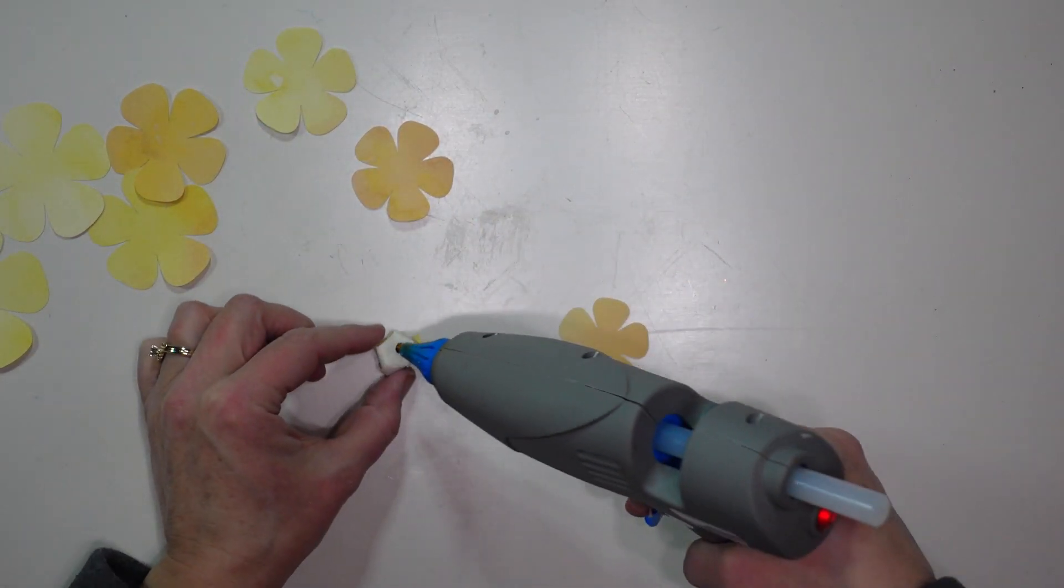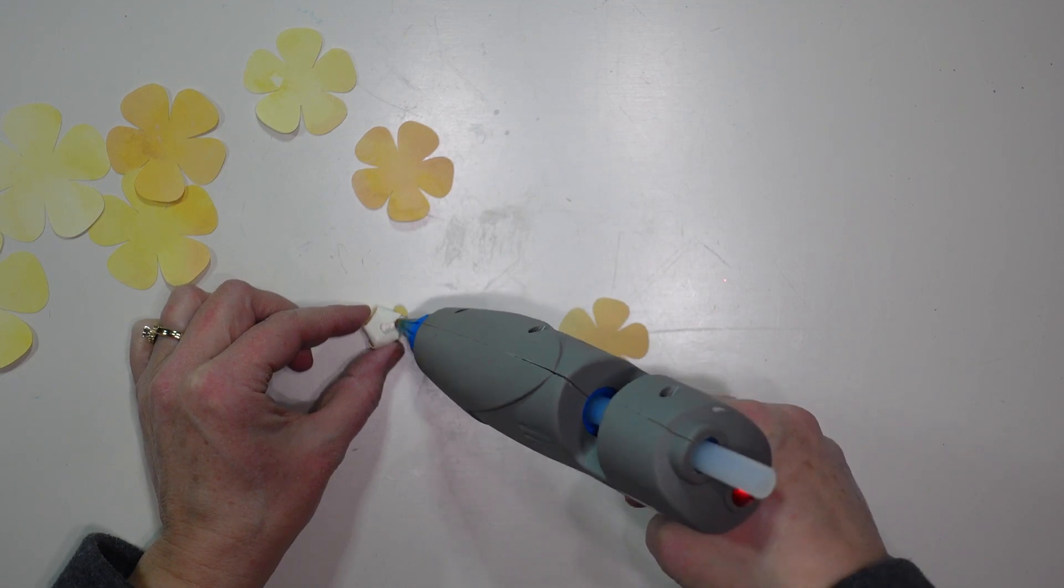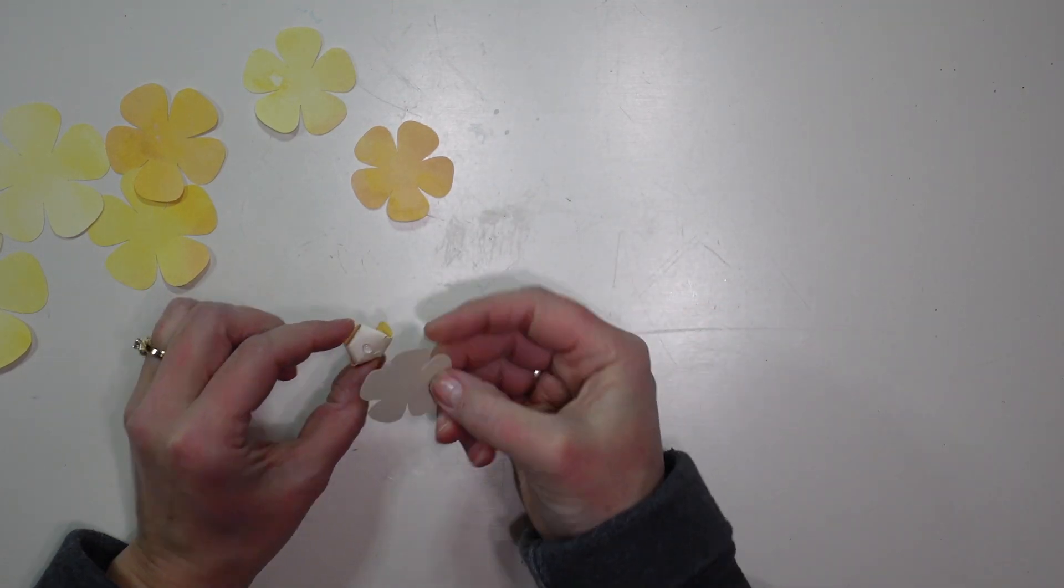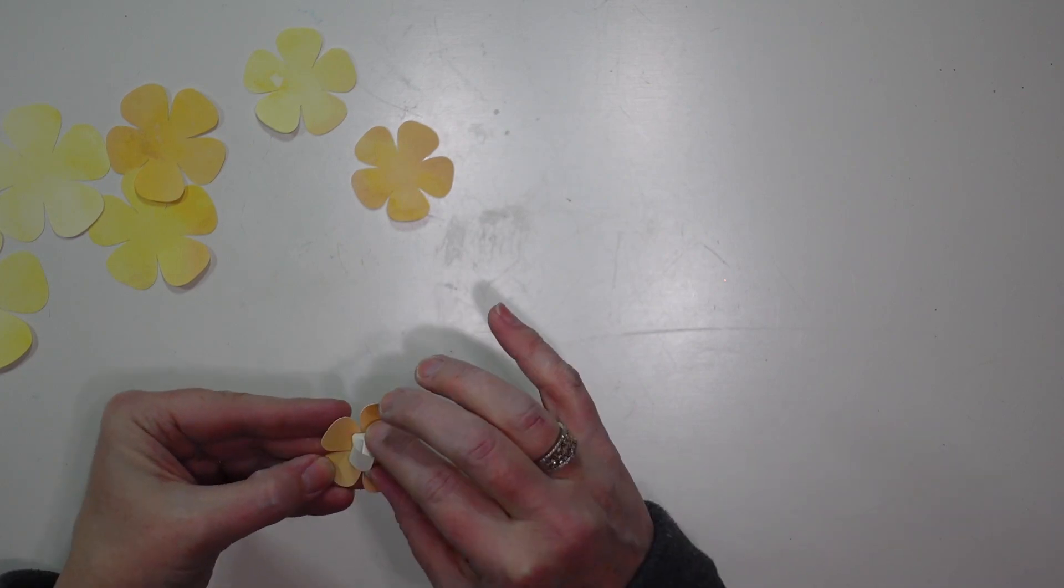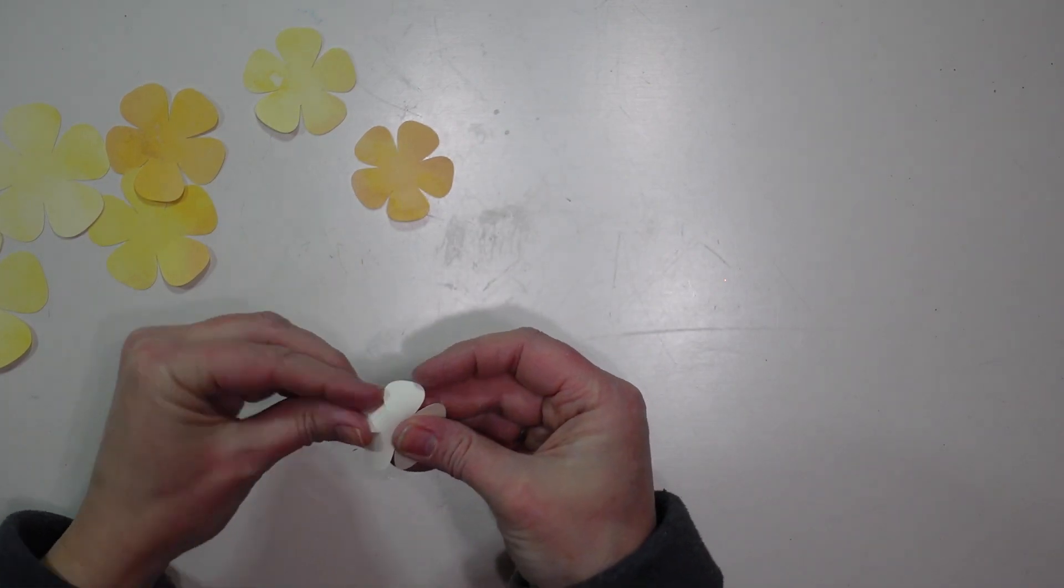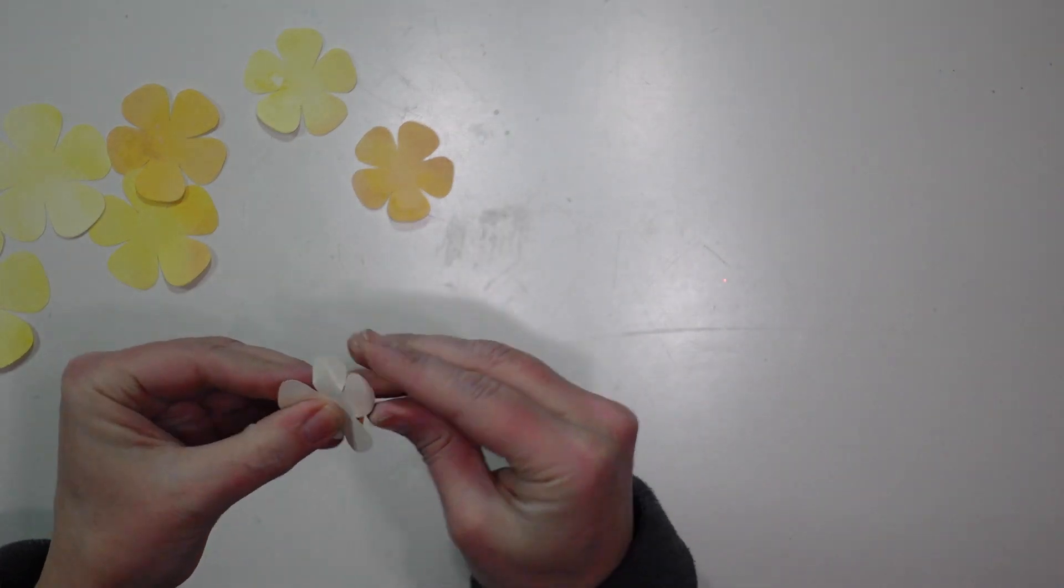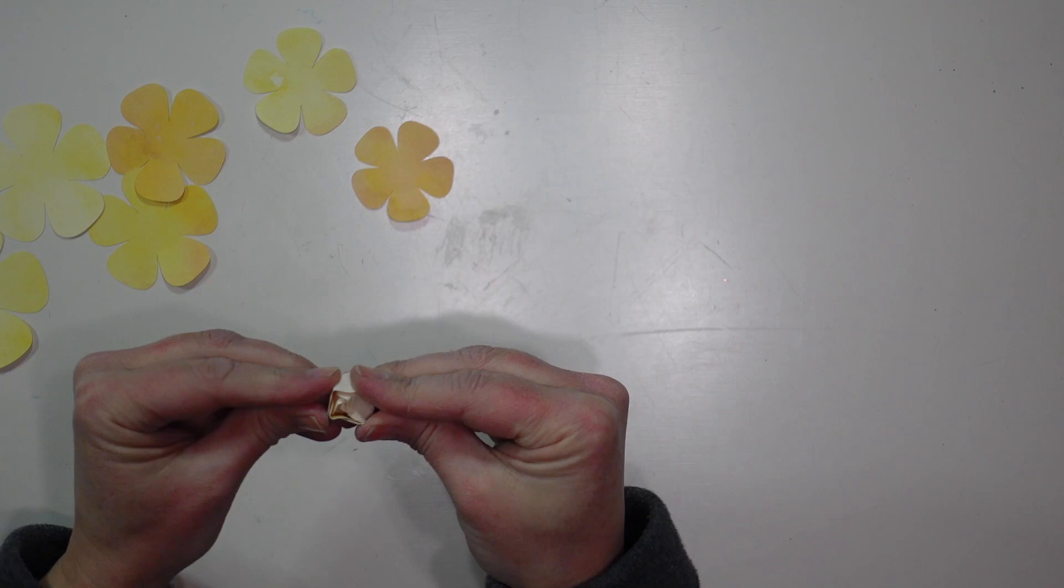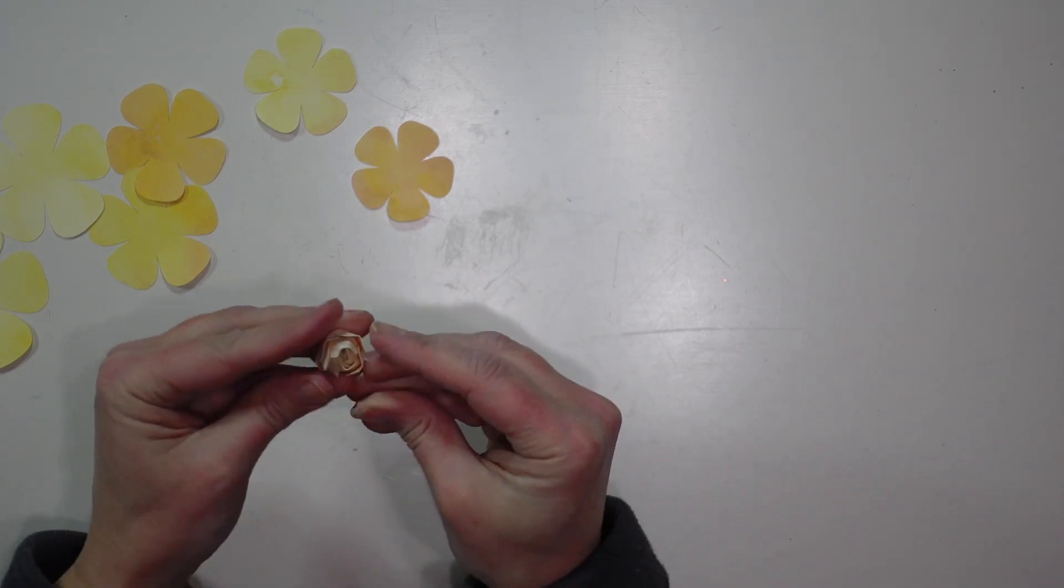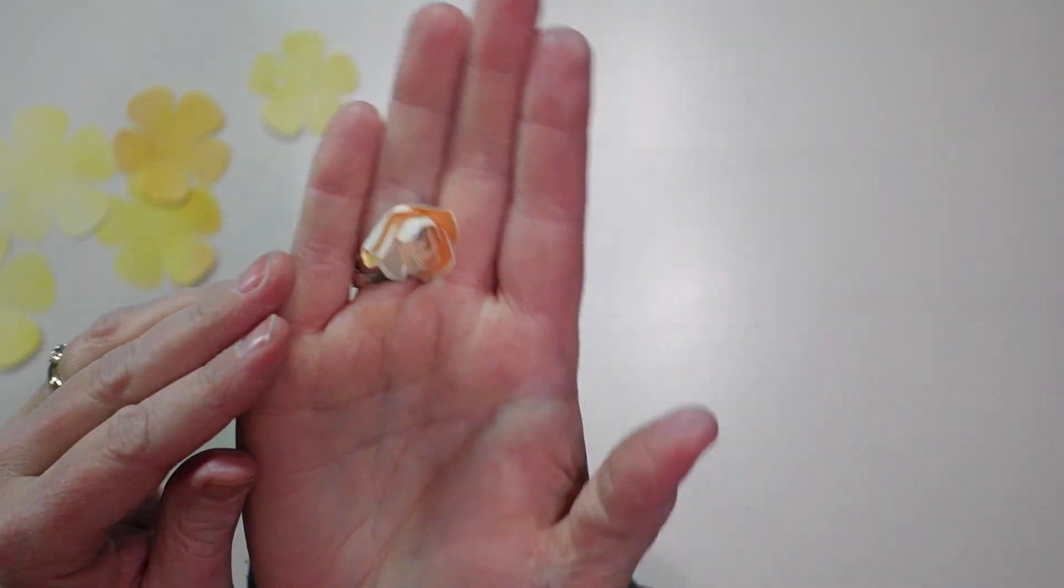Then I am going to add a drop of hot glue to the bottom of my little ball, and I am going to put the next size up petal on. I am kind of rotating them so they don't all line up all the same way and then I am going to just kind of fold those petals up and squish them together. I am going to continue this with all eight of the petals.